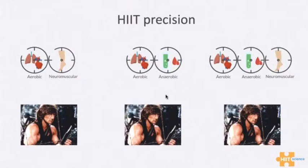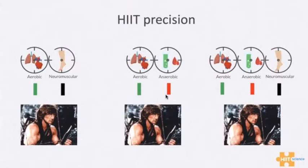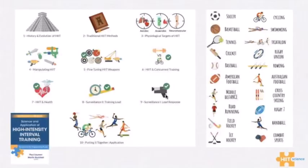The cool thing about HIT is that we can be very precise — like a Navy SEAL. We can actually form HIT so it has components of aerobic and neuromuscular, or just aerobic and anaerobic, or we can have all three different systems involved. You'll see that color code throughout the HIT science formulas.